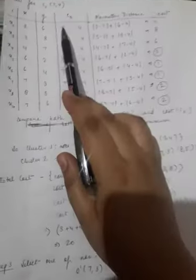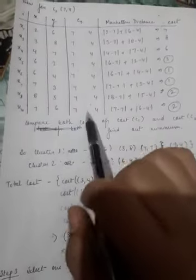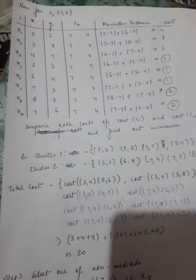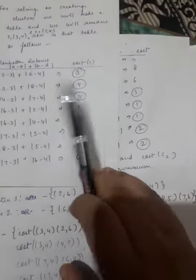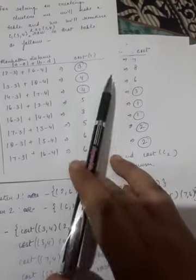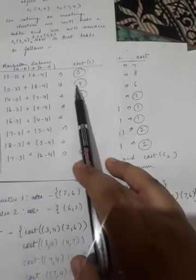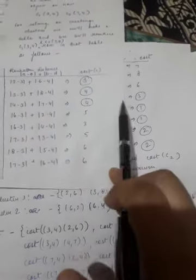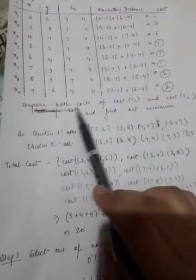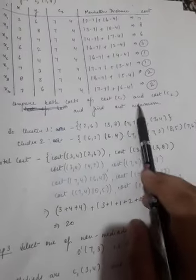C2 is 7,4. We will skip and compare this cost, and here we will mark and do likewise. We will mark the values. We will compare both cost of C1 and cost C2 and find out minimum.